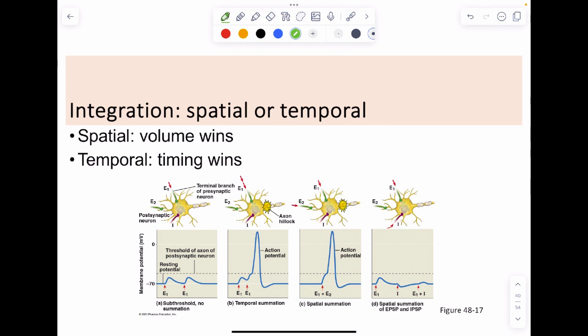The first one is what we call spatial, and that is just the amount wins. This is for the most part what we observe. But we can also have temporal, meaning the timing or the frequency is what wins, and we see this in your senses.